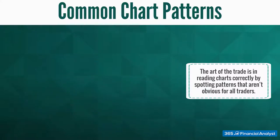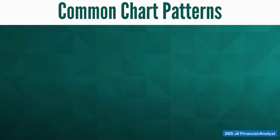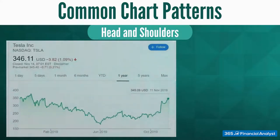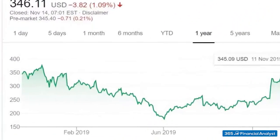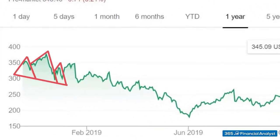The most well-known type of reversal pattern is the so-called head and shoulders. It consists of observing a chart in which the price movement presents two shoulders and a head between them. This is Tesla's one-year price chart — we can see a left shoulder, a head, and then a right shoulder.